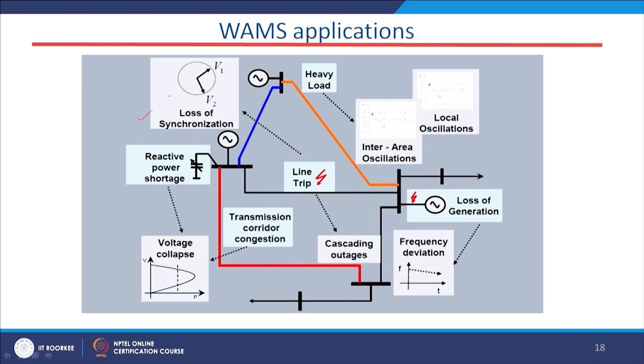Now, some examples of how WORMS technology helps us. The first is loss of synchronism — in a network with two or three generators, if a generator goes out of order due to a fault, maintenance, or other difficulty, it gets disconnected from the network. By taking voltage magnitude and phase angle information, we can always determine whether a generator is connected to the network or not.